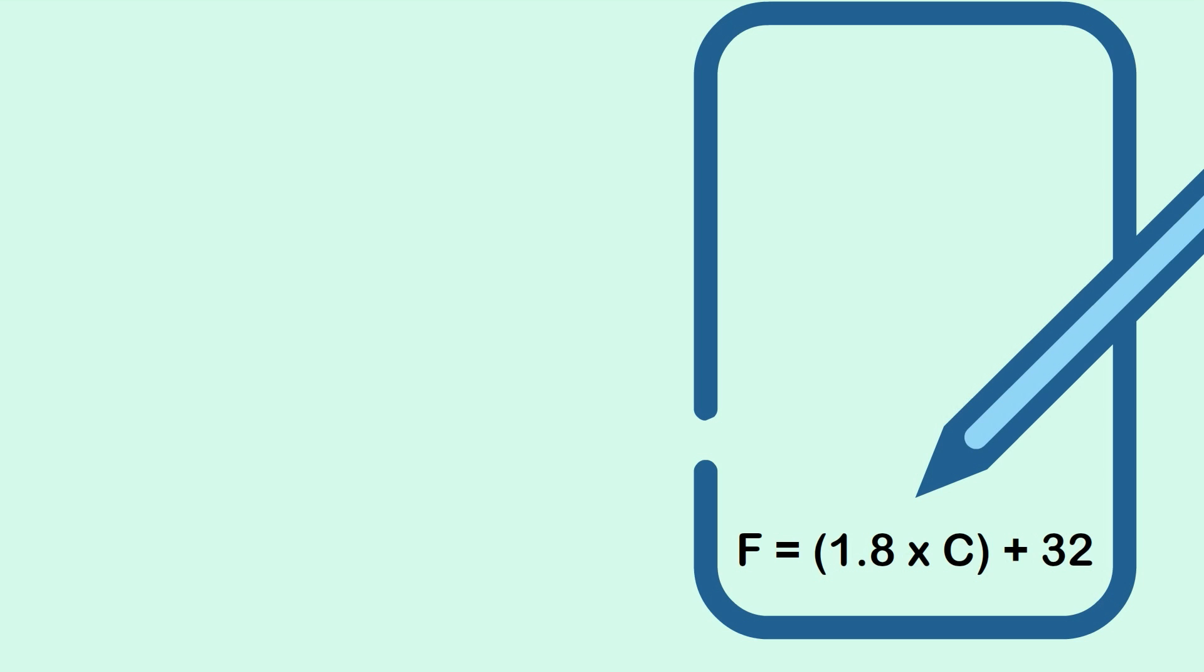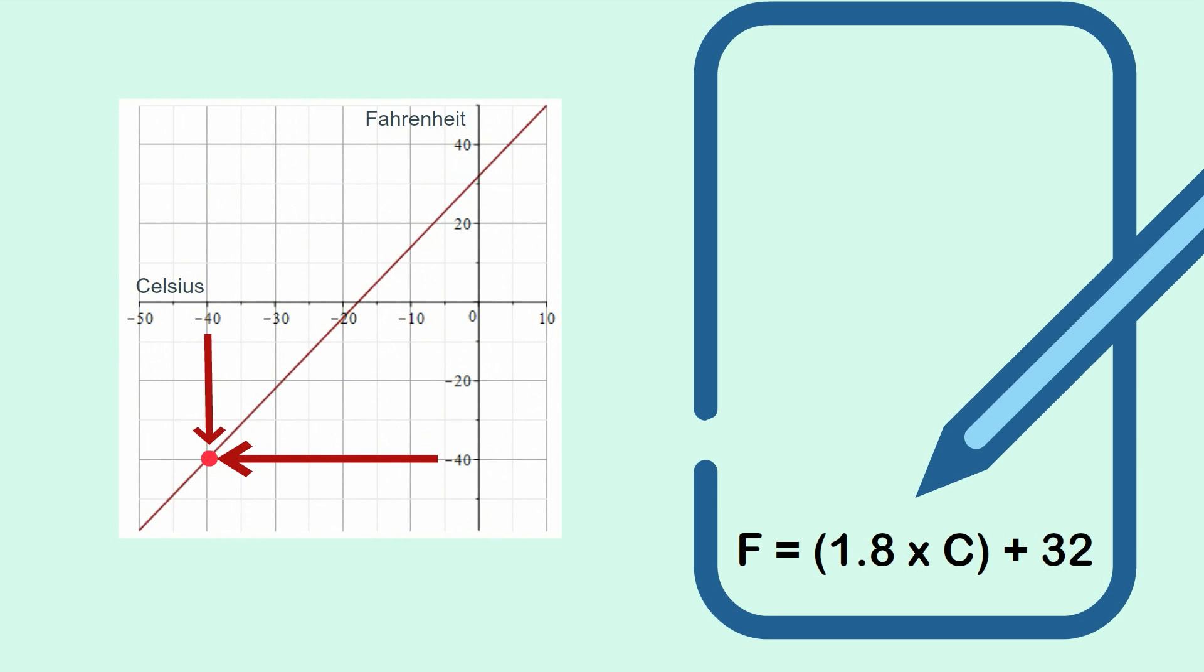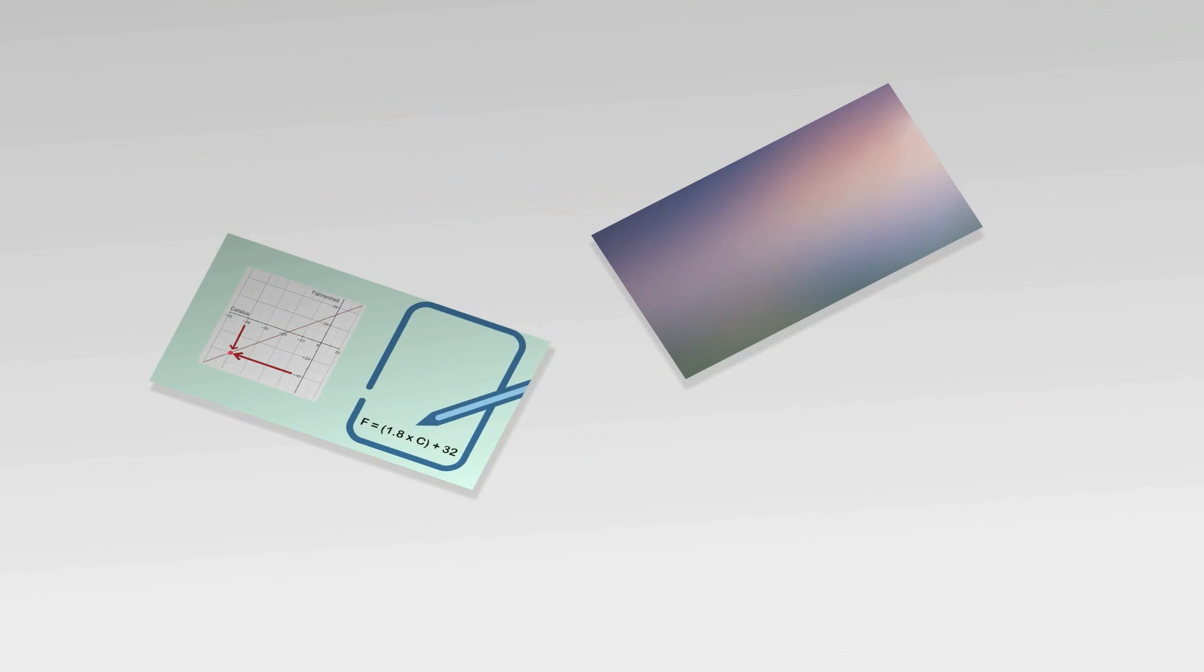Number 3. Here's the formula for centigrade and Fahrenheit that allows you to convert. Turns out that negative 40 is the same, whether it's centigrade or Fahrenheit. So if you're ever where it's really cold, and I've certainly never been where it's negative 40, don't ask someone whether they mean centigrade or Fahrenheit.